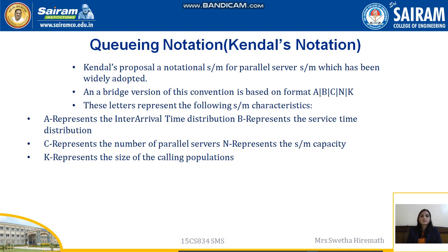In Kendall's notation A/B/C/N/K, these letters represent the following system characteristics: A represents the inter-arrival time distribution, B represents the service time distribution, C represents the number of parallel servers, N represents the system capacity, and K represents the size of the calling population. This is how we denote queuing models.